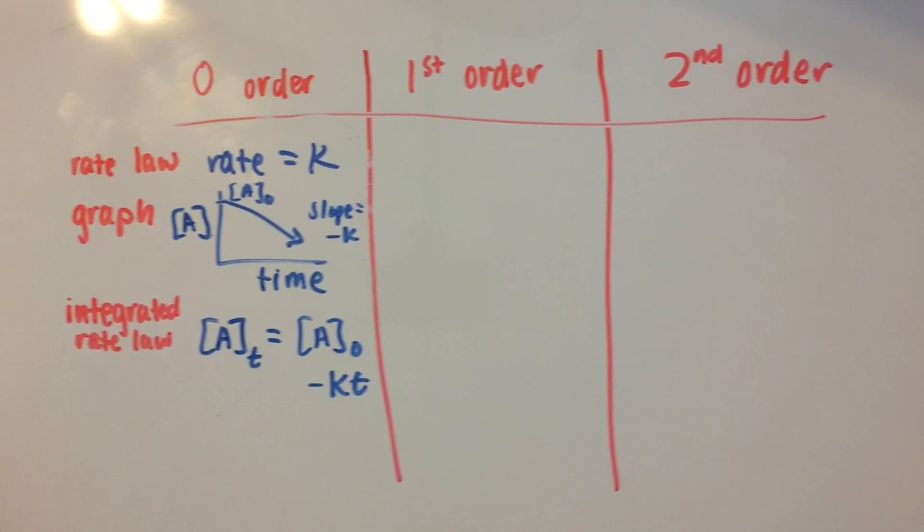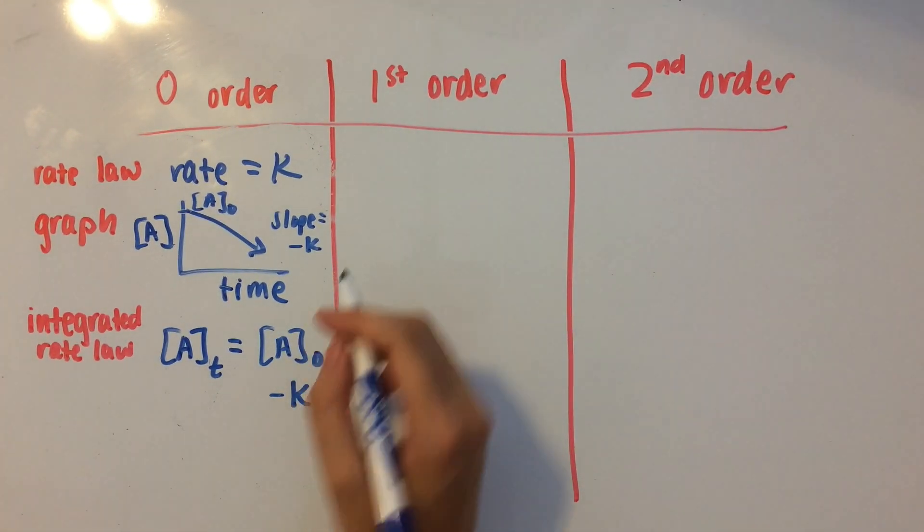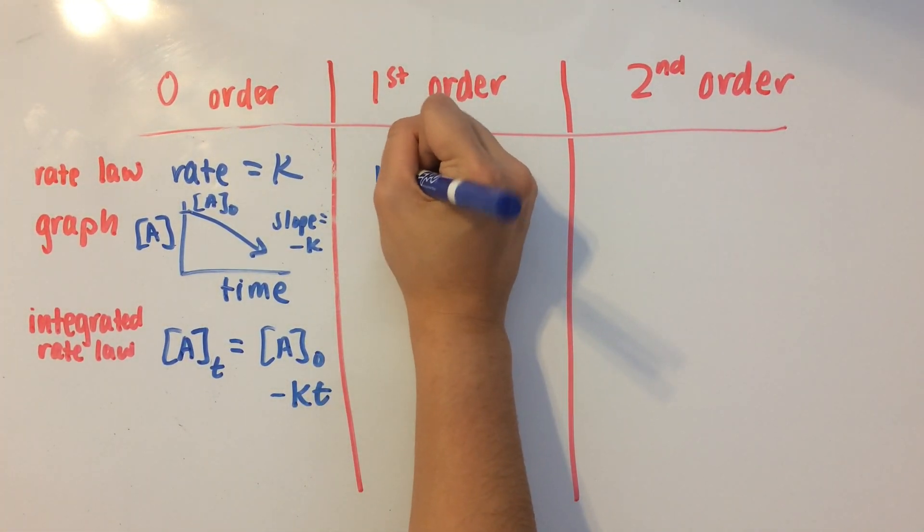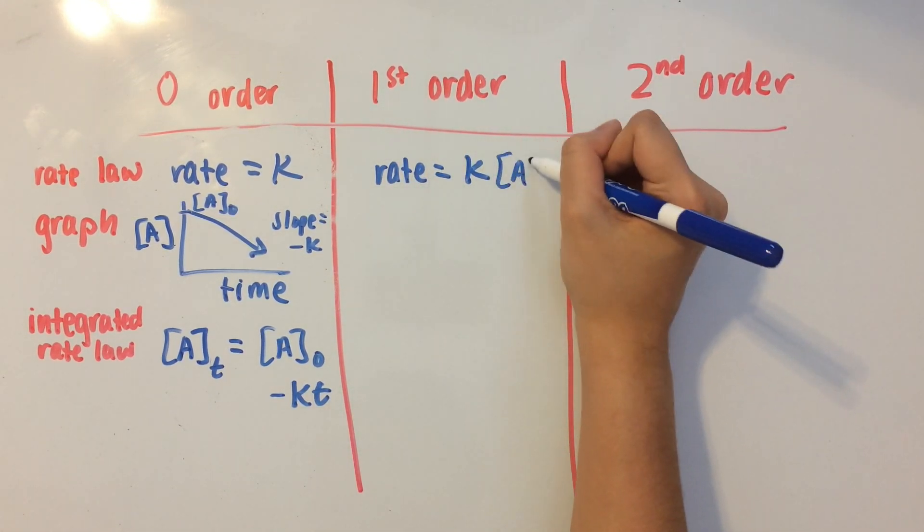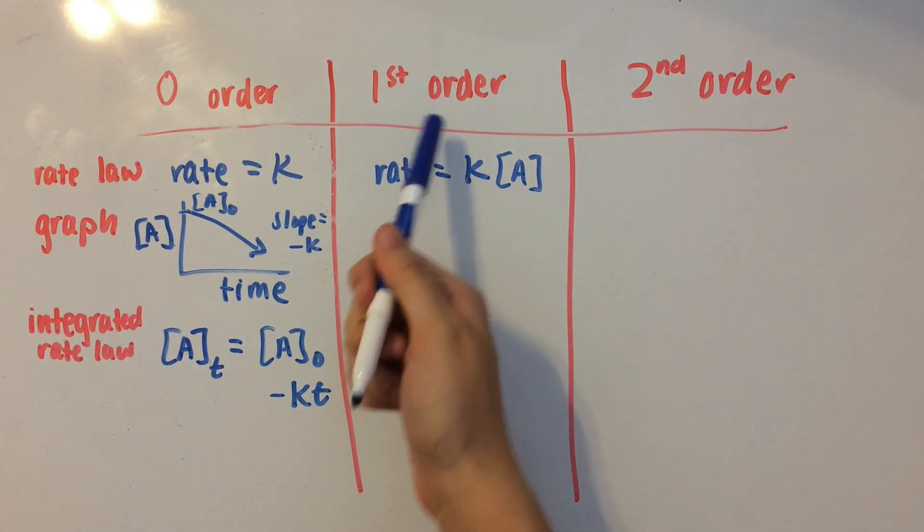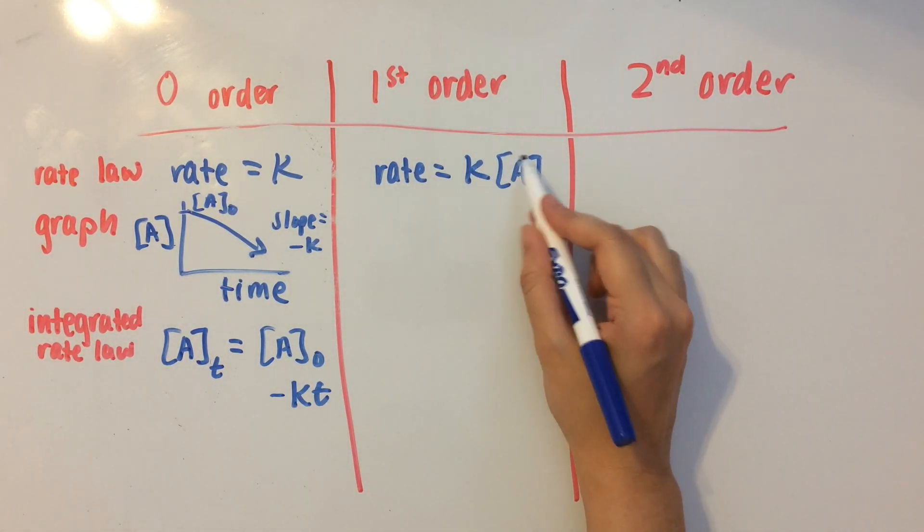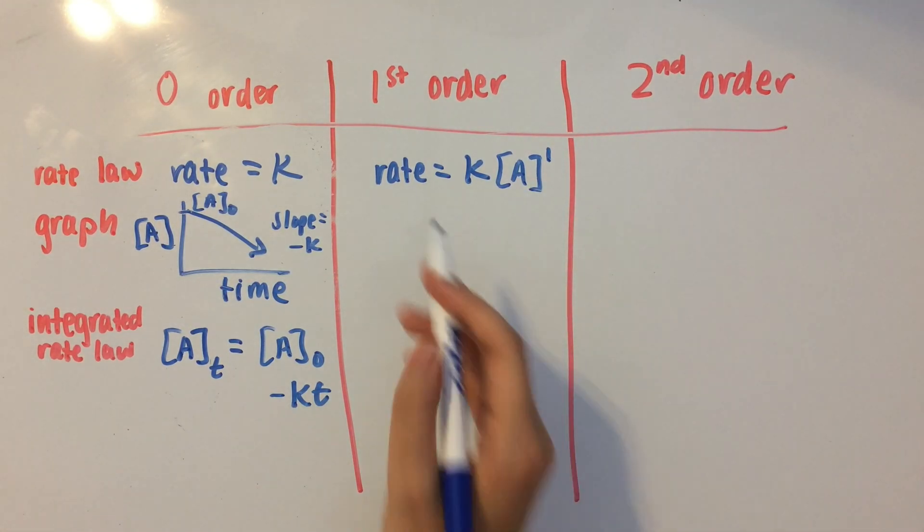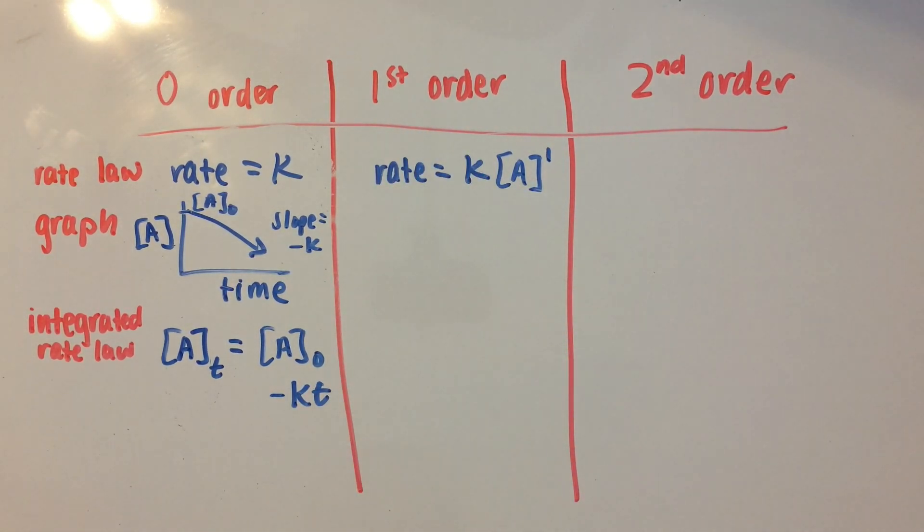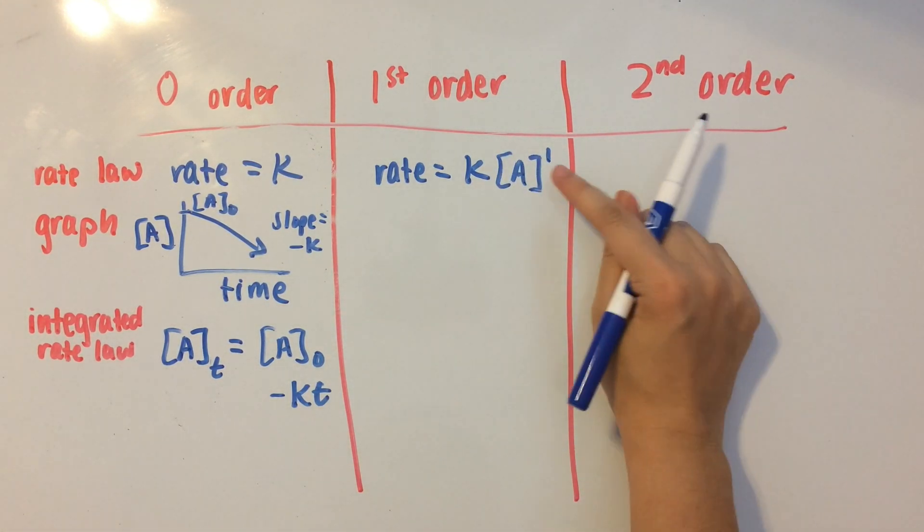Okay, so let's move on to first-order reactions. The rate law is going to be rate equals k times concentration of A. So this is first-order because technically the exponent for this would be 1. So to find the total order of the reaction, you would just add up all the exponents. And so it's just 1.